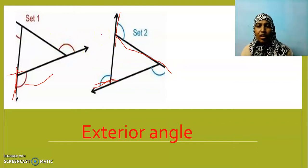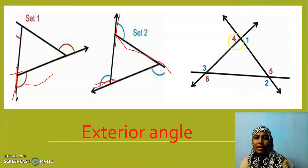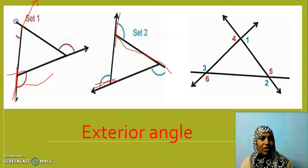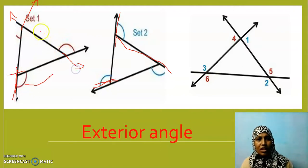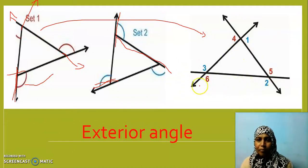So totally, how many exterior angles are there for a triangle? We have six exterior angles for a triangle. See here I have joined these two extensions. At each vertex I can extend in both ways. Similarly at each vertex I can extend both sides. So how many exterior angles do I have for a triangle? Six exterior angles.